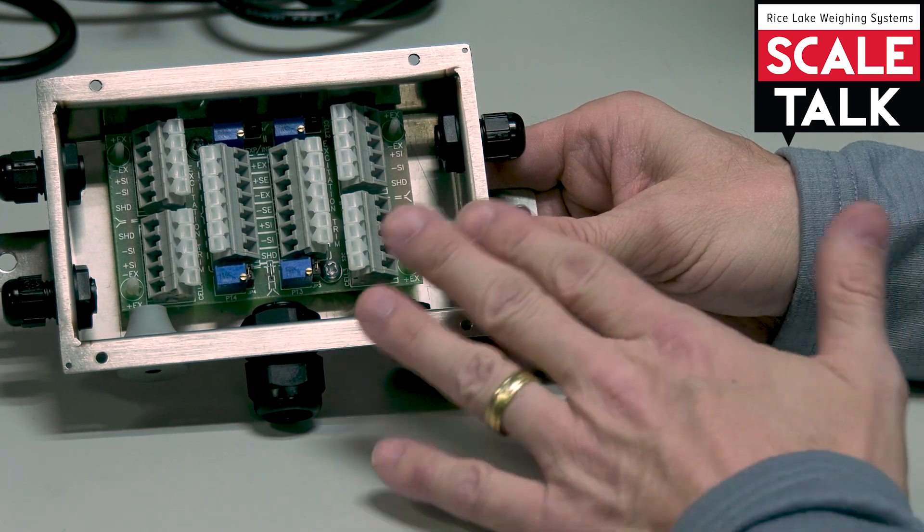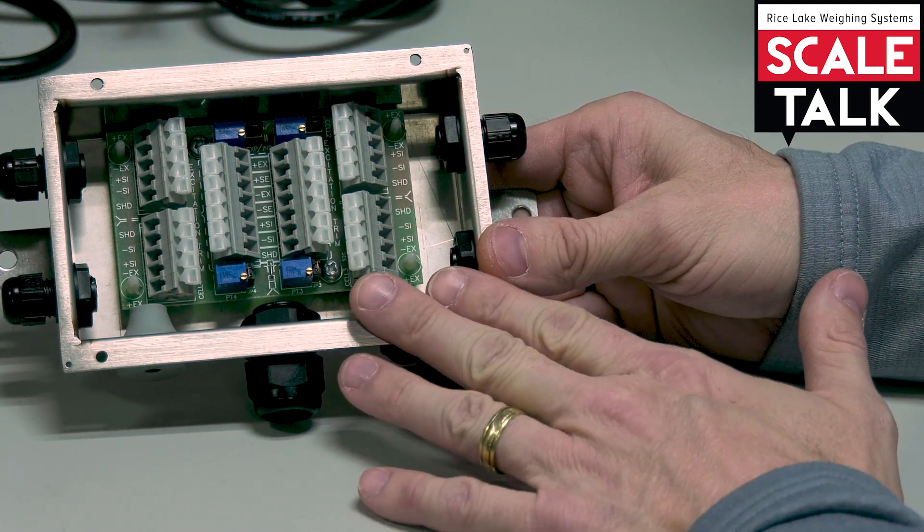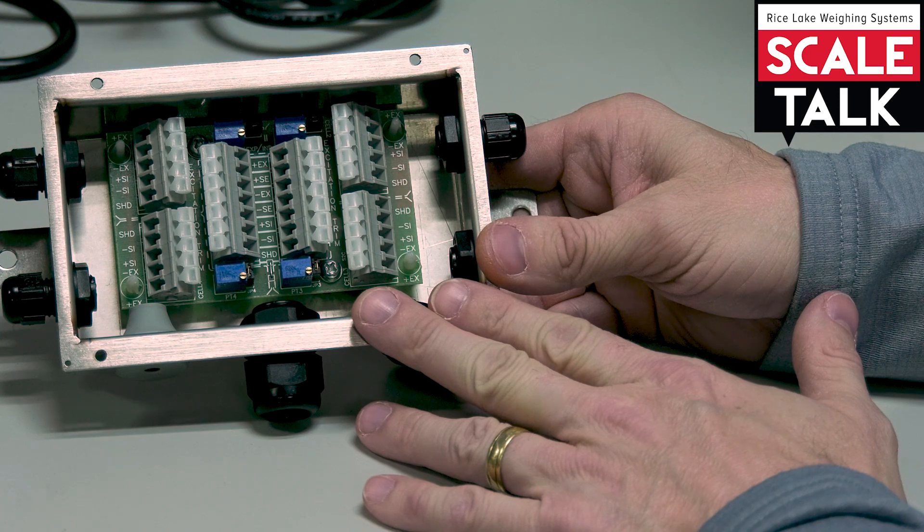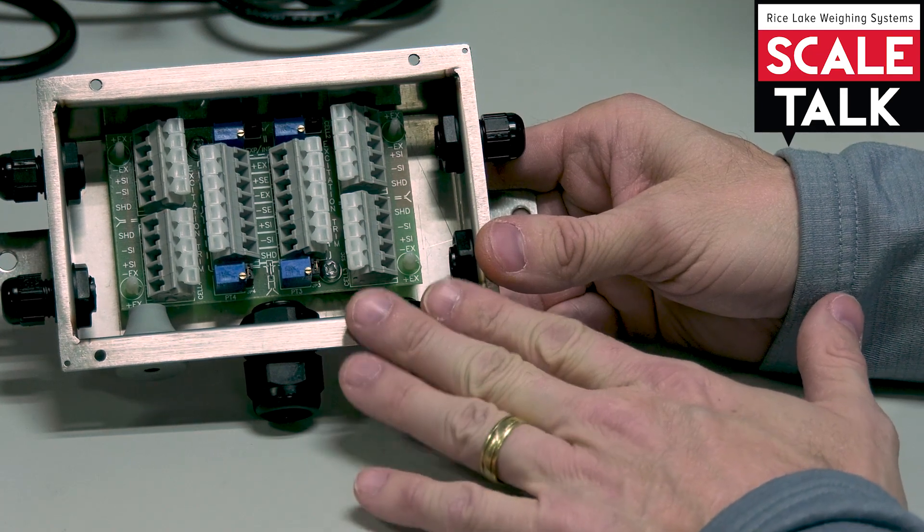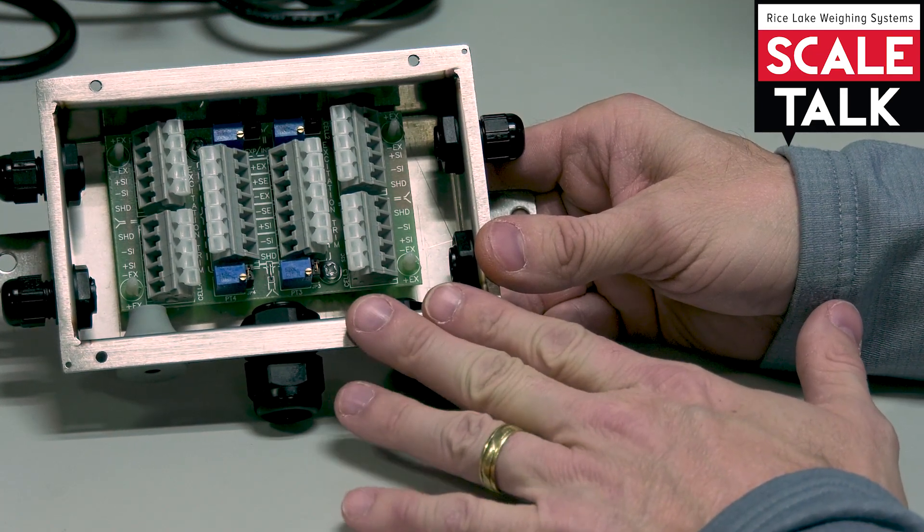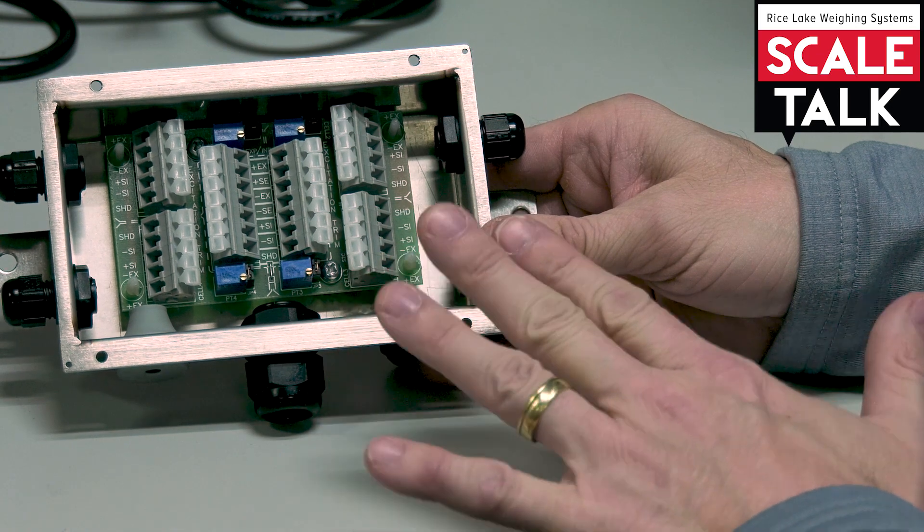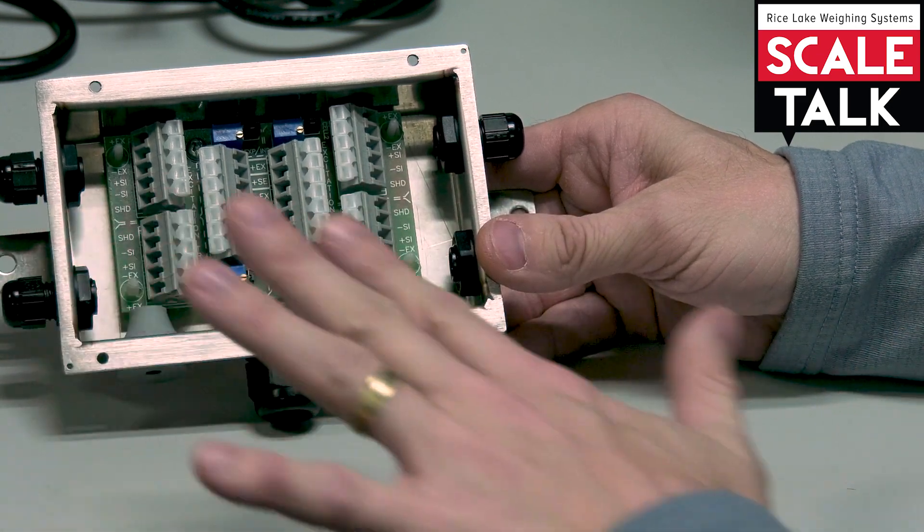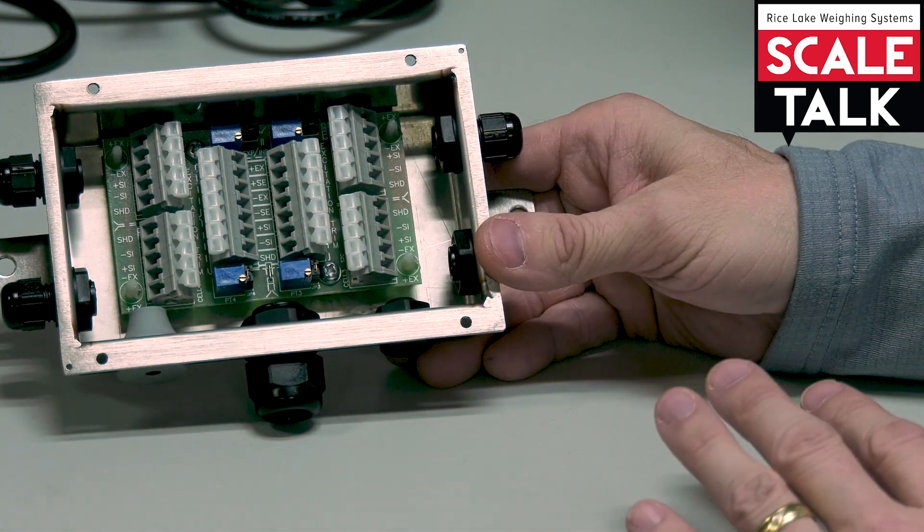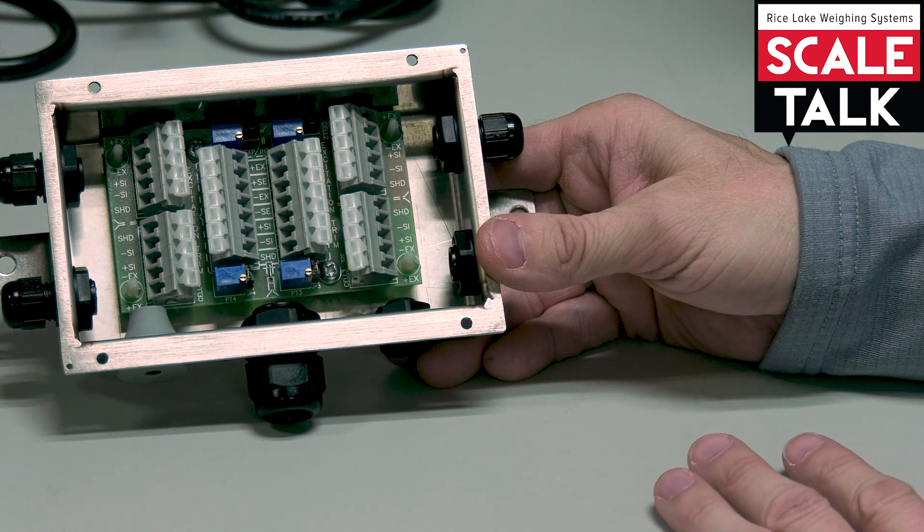I might calibrate it and it will read 500 pounds in the center, as I would expect. But if I shift it slightly to one corner or another, I might see those differences in weight being picked up.